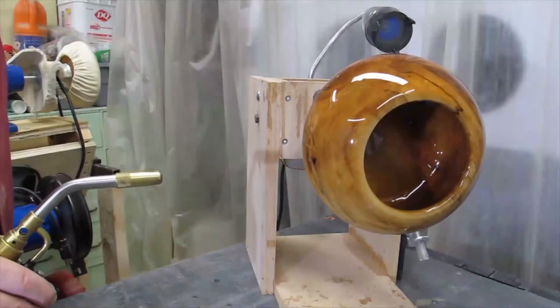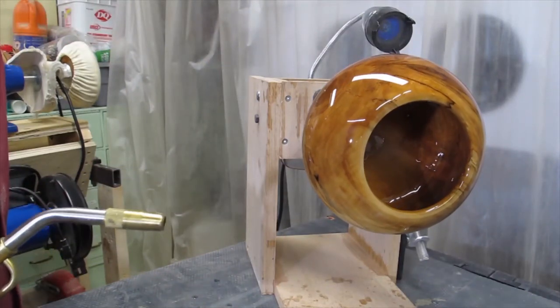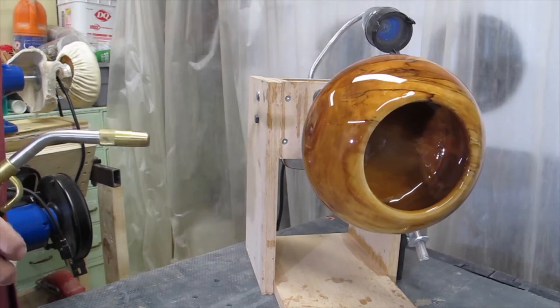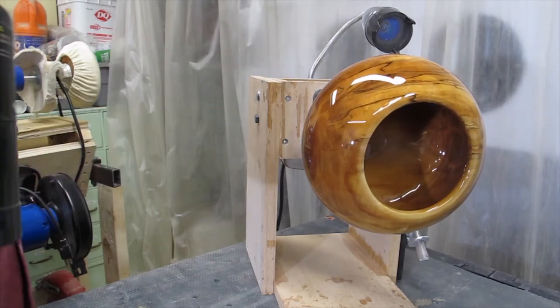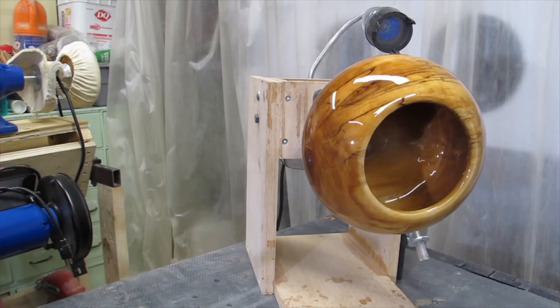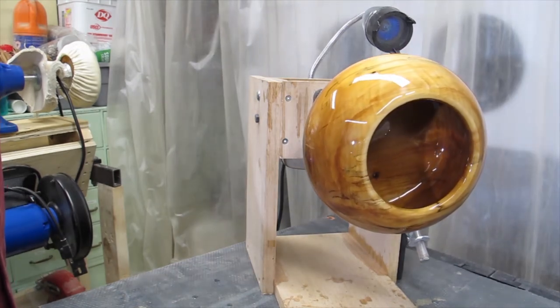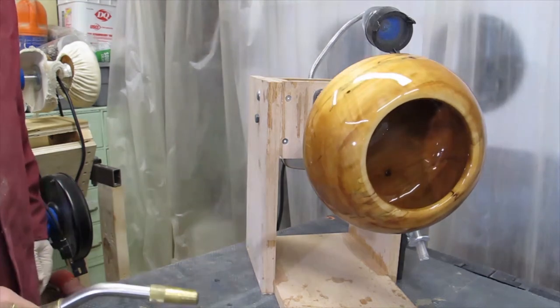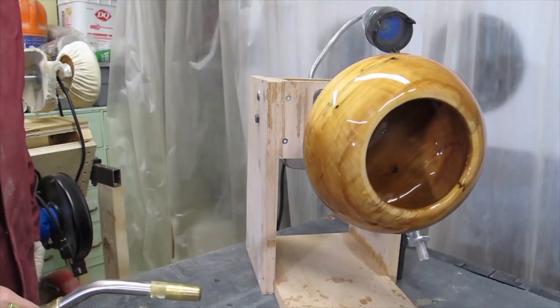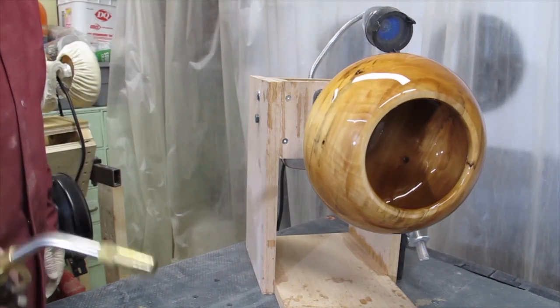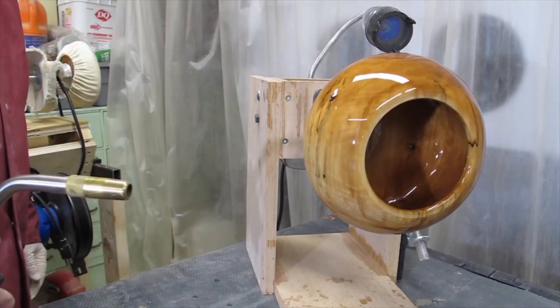The last step is to watch for bubbles. I'll take a torch and just quickly pop them. I have to watch the bowl for quite a while to make sure I get all the bubbles. I'll probably spend a half hour popping bubbles. They're very tiny bubbles but I don't want them on my bowl.